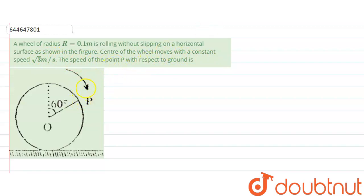First of all, it is moving without slipping, so we can say that velocity of center, which is O in this case, velocity of center V_O, would be equals to R into omega.